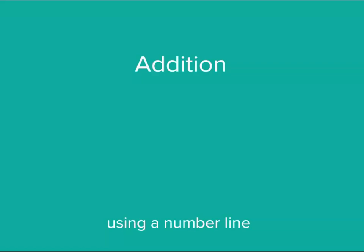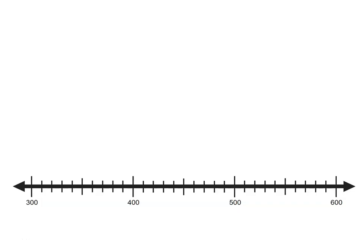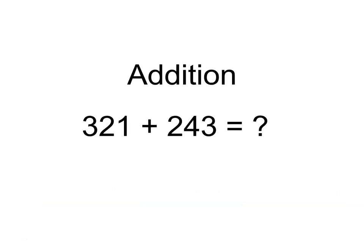We're still going to think about place value, but we're going to use a number line to help us with addition. Have a look at this lesson. Let's use a number line to help us add 321 and 243.